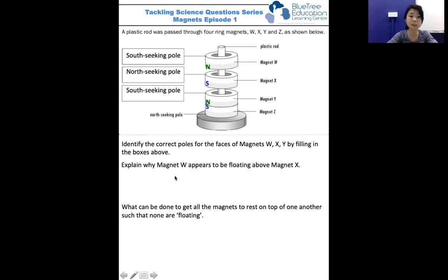So this is easy. Let's look at the second part of this question. Now, the question wants us to explain why W is floating above X, so this portion.